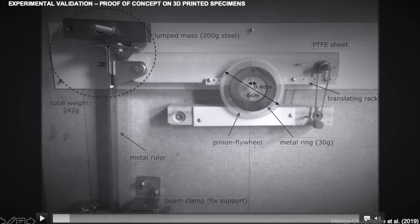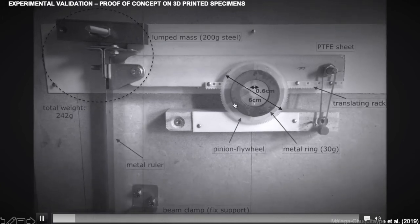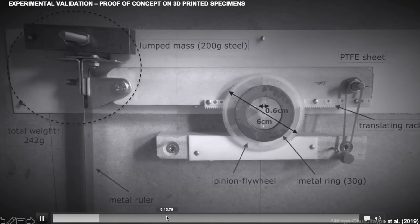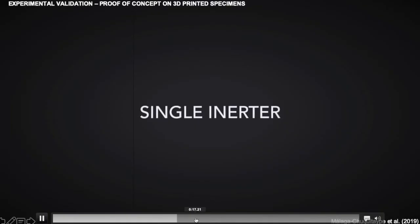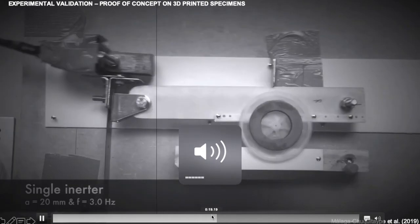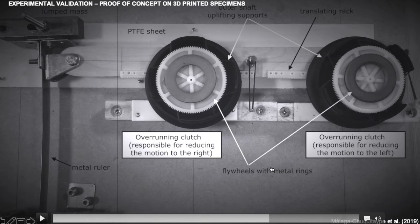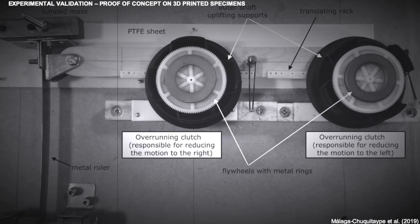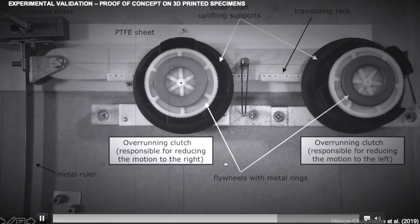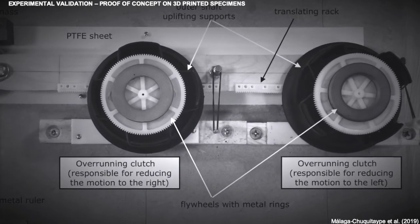He performed a series of experiments. Here you can see that we are reducing the system to its bare essentials to understand the fundamentals, and then we will be scaling this up to the structural engineering scale. Here we have a column with a mass, a source of compliance. We have the inerter, which is our rotating disk that is attached by means of this rack and pinion system. He performed a series of tests, including single inerters and also inerters with clutches. When you have a clutch, you need to have two devices because one will be acting in one direction, while the other either remains idle or acts in the other direction.